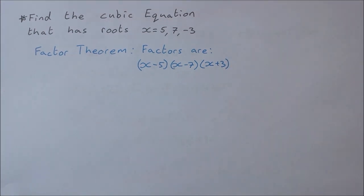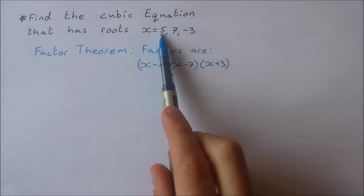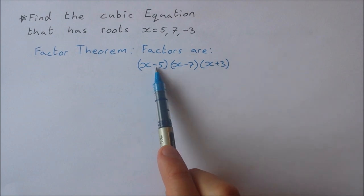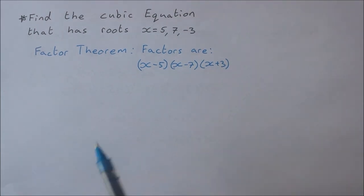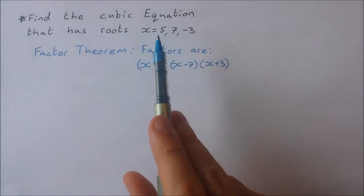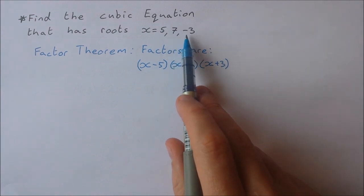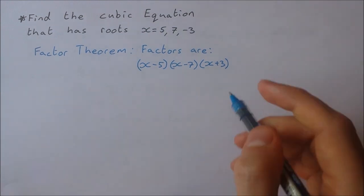Just be careful that if these are the roots, then the factors have the opposite sign in them. So 5 and minus 5, 7 and minus 7, minus 3 and plus 3. So we want to find the cubic equation.